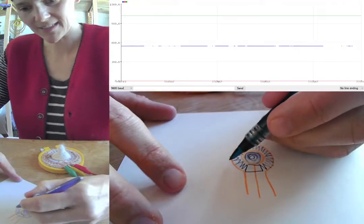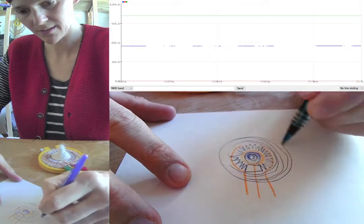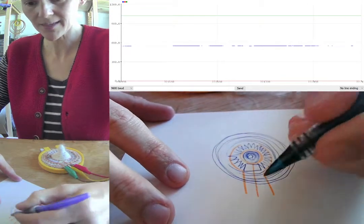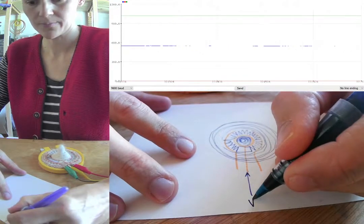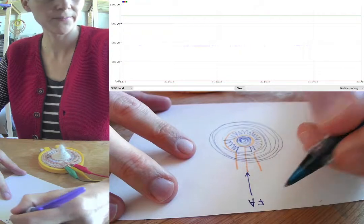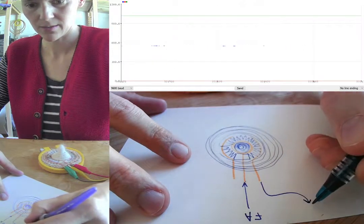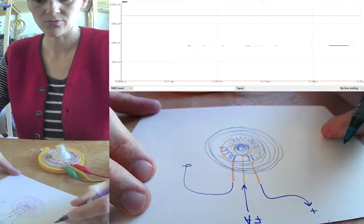And then I continue to crochet a bit more around to make the circle big enough to stretch in the embroidery hoop. And the middle connection I connect to analog pin seven. And then one of the connections goes to plus and the other to ground.